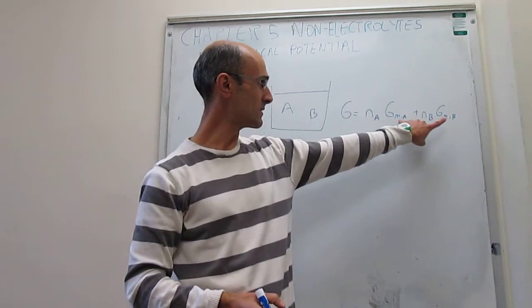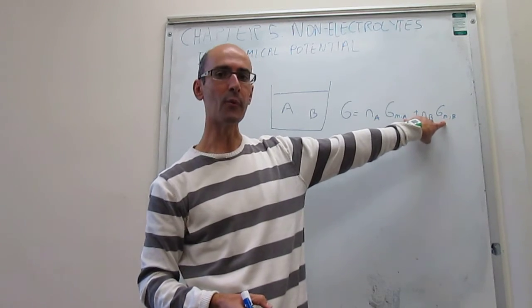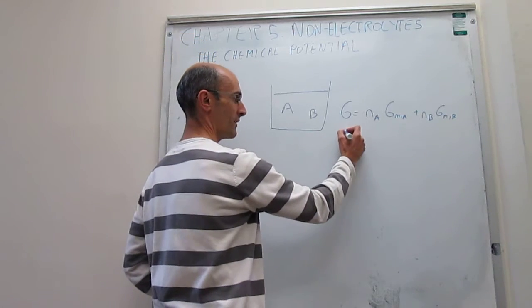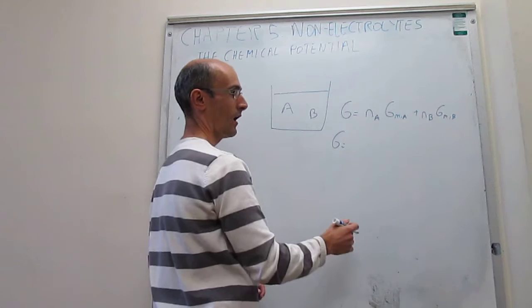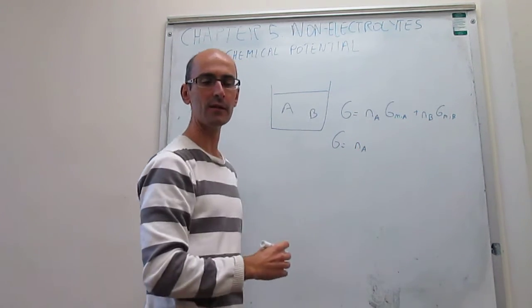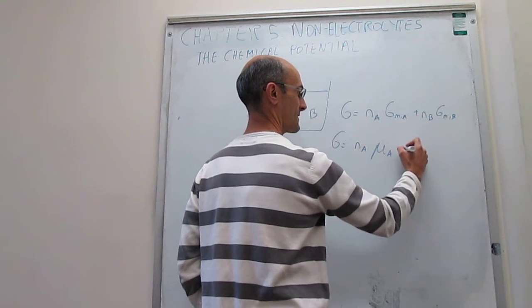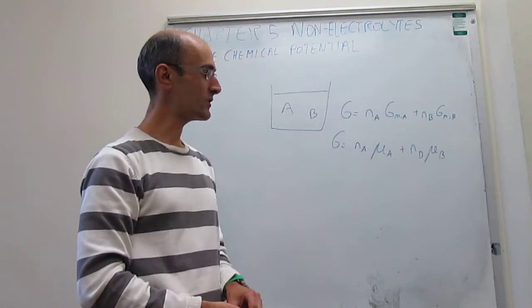So, these values are actually extremely important, and they are so important that we're actually going to rename them. From now on, instead of using molar Gibbs energy of A and B, or water and glucose, we're actually going to call them the chemical potential. That's how we call this.